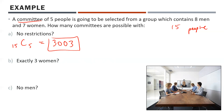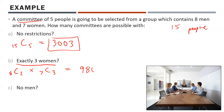What about exactly three women? Three women on a committee of five means there are also exactly two men. So we choose two from eight men — 8C2 — times choosing three from seven women — 7C3 — which equals 980 possibilities where there are exactly three women and exactly two men.